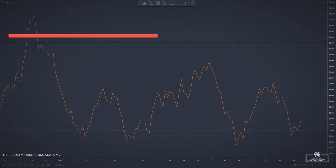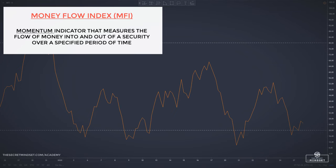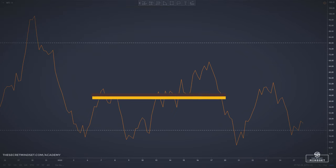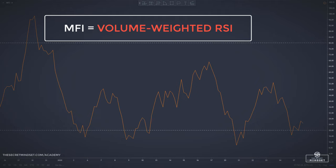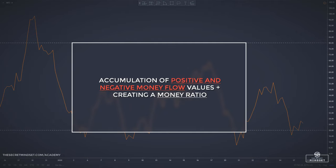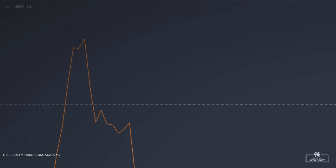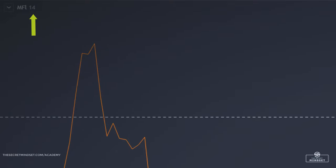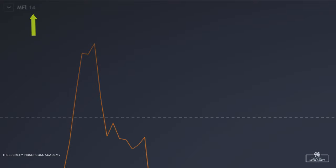The money flow index is a momentum indicator that measures the flow of money into and out of a security over a specified period of time. It is related to the relative strength index but incorporates volume, whereas the RSI only considers price. For this reason, some analysts call the MFI the volume weighted RSI. The money flow index is calculated by accumulating positive and negative money flow values, then creating a money ratio. The money ratio is normalized into the MFI oscillator form. The indicator is typically calculated using 14 periods of data and uses price and volume and the concept of accumulation and distribution, being quite helpful in confirming trends in prices and warning of potential reversals in prices.